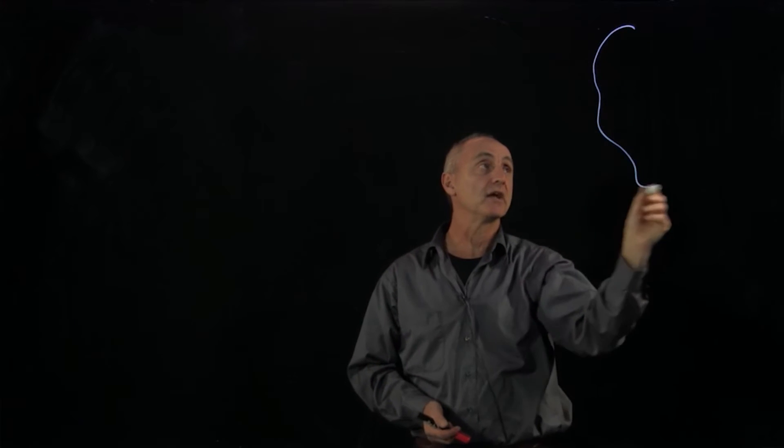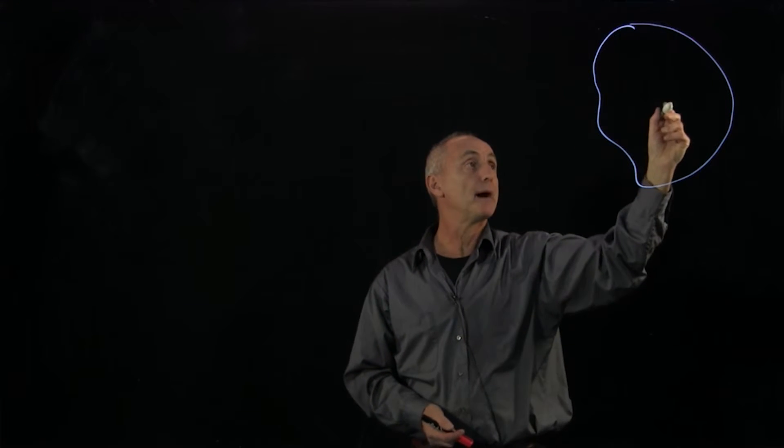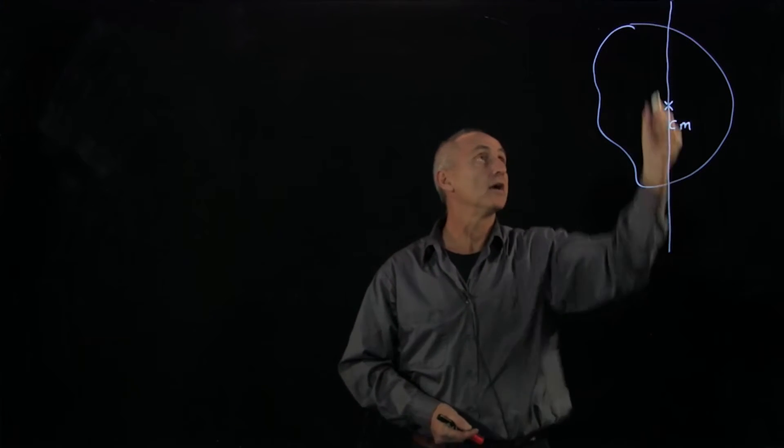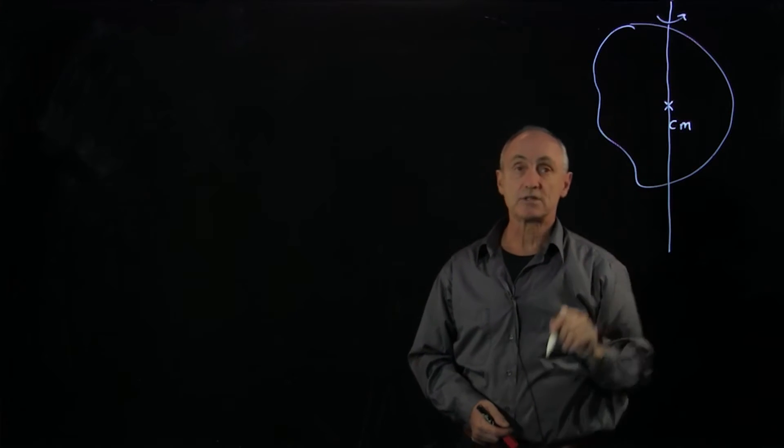We would now like to compare the moment of inertia for a rigid body, let's take an arbitrary rigid body, about the center of mass. So let's say the rigid body is rotating about this axis.